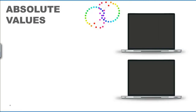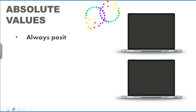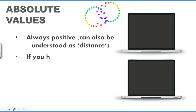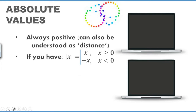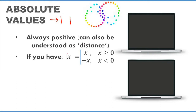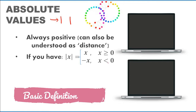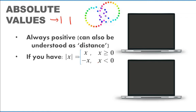We're going to continue with our following subtopics, which is about absolute values. Absolute values are always positive and can also be understood as distance. The notation for absolute values uses two straight bars. The modulus of x is defined as x when x is greater than or equal to zero, but negative x when x is less than zero.